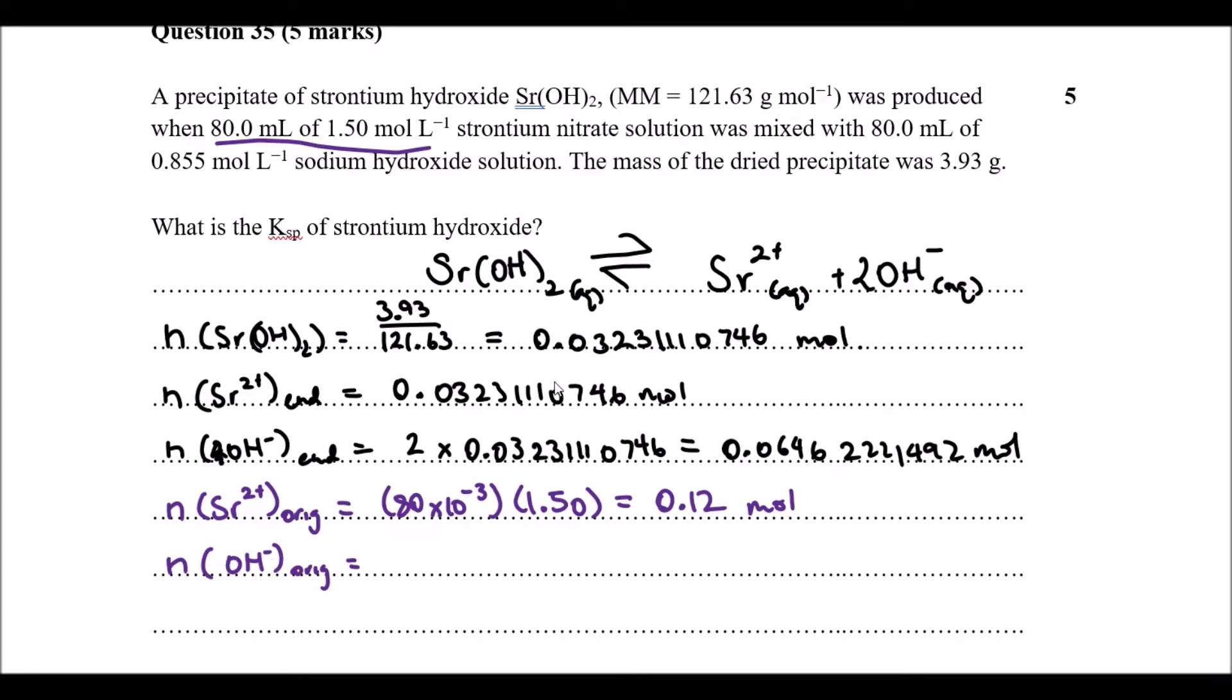And the original moles of the hydroxide solution I had. I guess you could write the sodium hydroxide and the strontium nitrate, but this way it's just a little bit easier for myself. If you like to format this bit a little bit differently, feel free to. And I had 0.0684 moles.